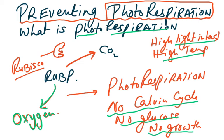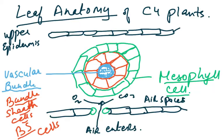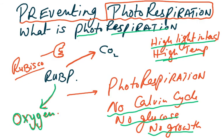We found that plants surviving in high light intensities and high temperatures were not the same as those at low temperatures and low light intensities. Looking at their structure, we found it was very different: upper epidermis, lower epidermis, vascular bundle, bundle sheath cells, and mesophyll cells. We realized there was some mechanism operating to prevent photorespiration.